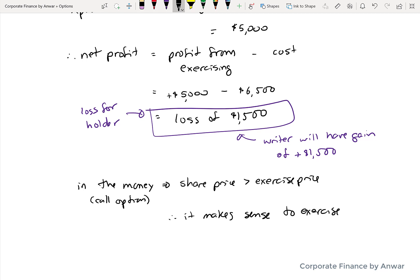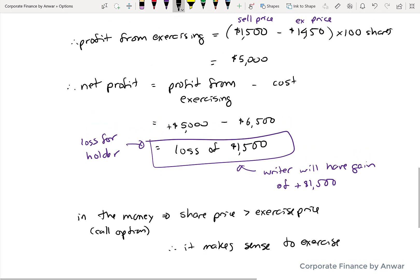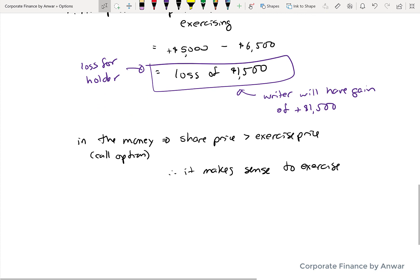Now if you had a situation where the shares were trading at $1,400 and the exercise price was $1,450, then you would not exercise that option. You would not buy the shares at $1,450 when you can buy them at the marketplace for $1,400 on their own. So in that case you would lose money for sure because there's no profit from exercising but there is a cost.